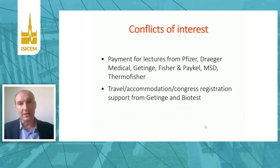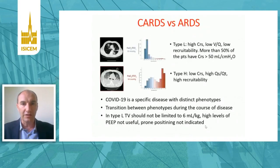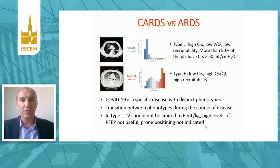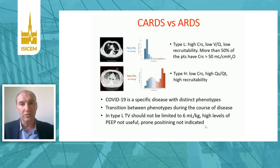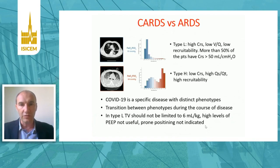This debate arises from the observation of Luciano Gattinoni, who proposed that COVID-19 is a specific disease with two distinct phenotypes according to the value of respiratory system compliance. Type L is characterized by high compliance, low V/Q ratio and low recruitability, comprising more than 50% of patients. The second phenotype is characterized by low compliance and high intrapulmonary shunt fraction, more similar to classical ARDS.